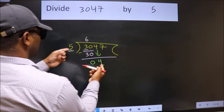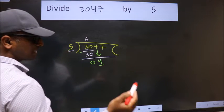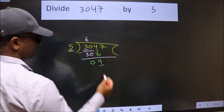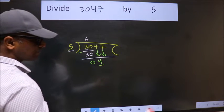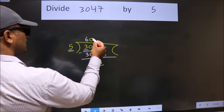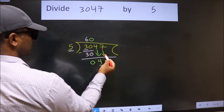4 is smaller than 5, so we should bring down the second number. And the rule to bring down second number is put 0 here. Then only we can bring this number down.